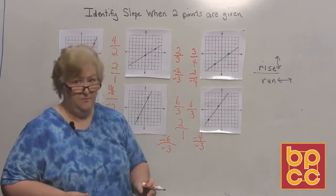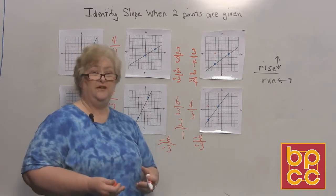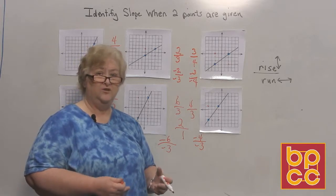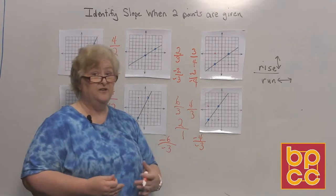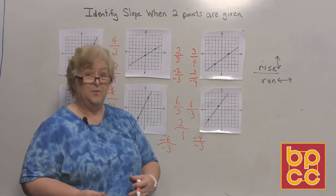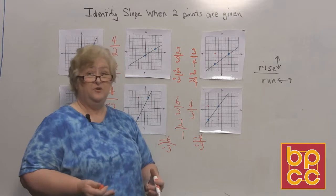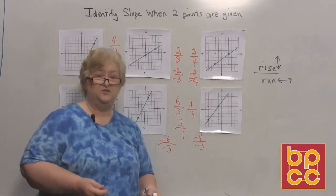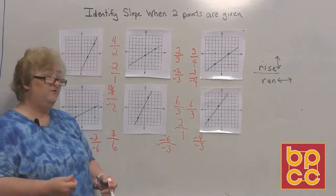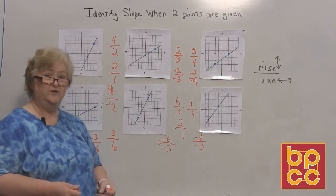Now you don't have to do it both ways. I just want to let you know that it doesn't really matter which location you start with. If you keep up with up is positive and down is negative, to the right is positive, to the left is negative, then you're going to be fine. So it doesn't really matter which dot you start on. Okay, I think this is a pretty good review over finding slope when two points are given to you.